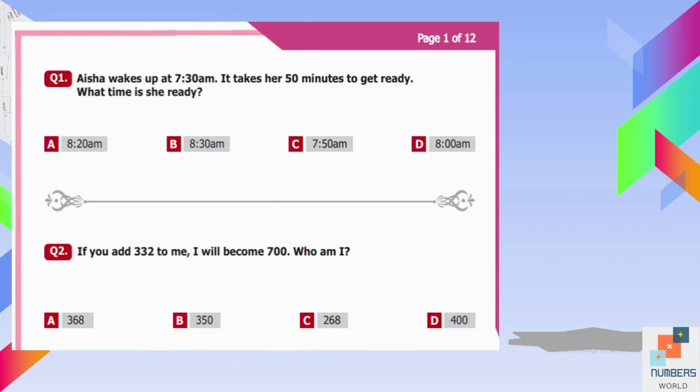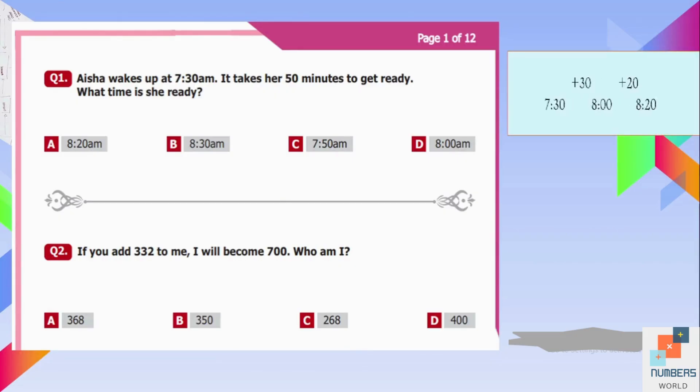Question number one: Aisha wakes up at 7:30 AM. It takes her 50 minutes to get ready. What time is she ready? We can make a timeline and split 50 into two parts: 30 plus 20 equals 50.